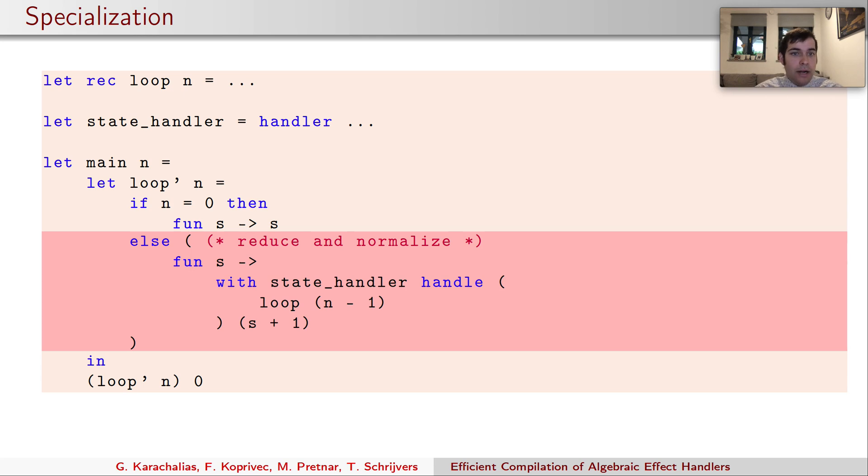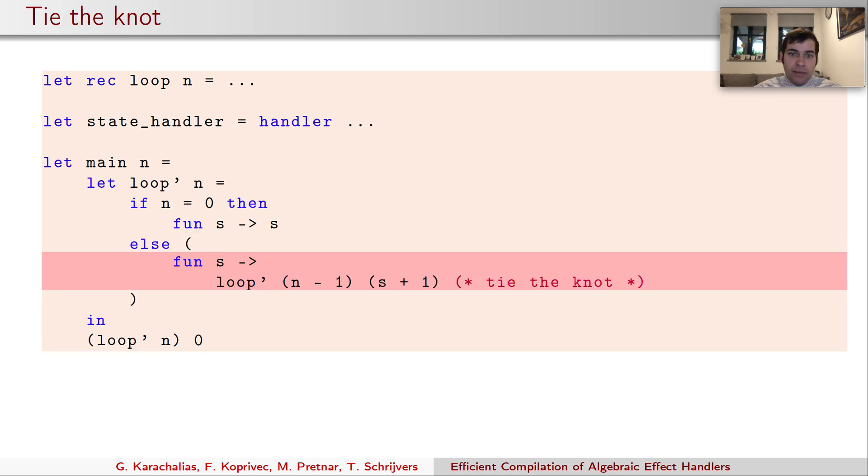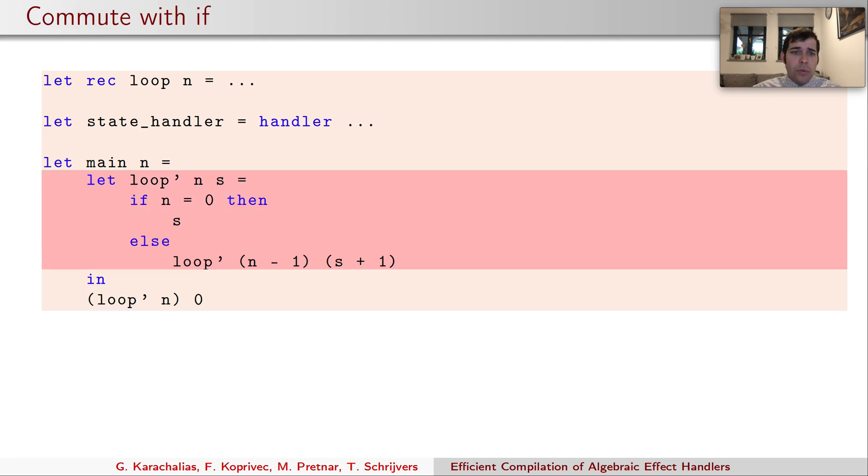But that is exactly loop prime applied to n-1. Remember loop prime was defined as the original handler wrapped around the body of the original loop. So here we can tie the knot and replace this with the call to loop prime and we are left with the recursive function and no handler at all. Then we can just lift these anonymous functions out of the if statement and we have a nice tail recursive final result. And this one is similar to the one that the human would write modulo some renamings.